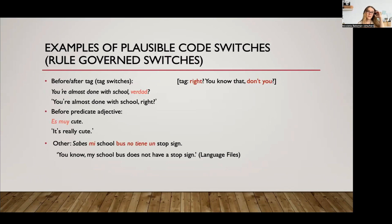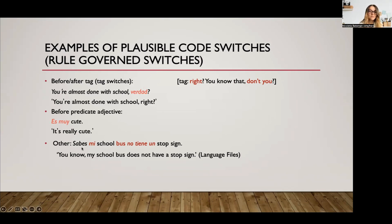Looking at Spanish-English examples, some plausible code switches include before or after a tag question — for example, 'You're almost done with school, right?' You can also code switch before a predicate adjective: 'Es muy cute.' Or: 'Sabes, mi school bus no tiene un stop sign' — 'You know, my school bus doesn't have a stop sign.' These are acceptable code switches. Implausible code switches — marked with an asterisk meaning ungrammatical — include switching between a clitic and a verb, between a negative and a verb ('El jefe no want to pay us'), between a root and an affix ('Estaba ranando in the library'), or between a subject pronoun and a verb ('Joe went to the store').